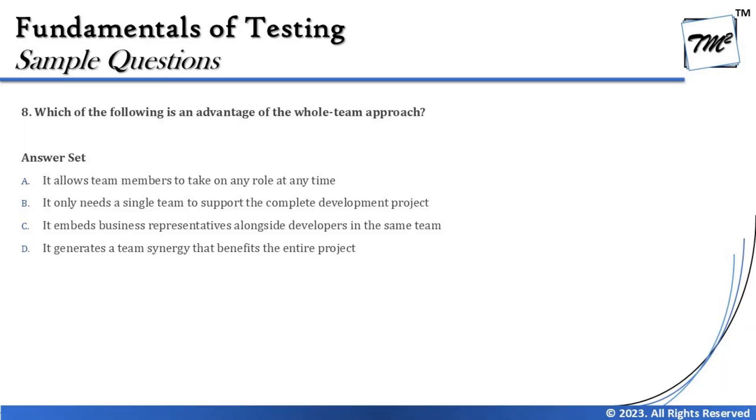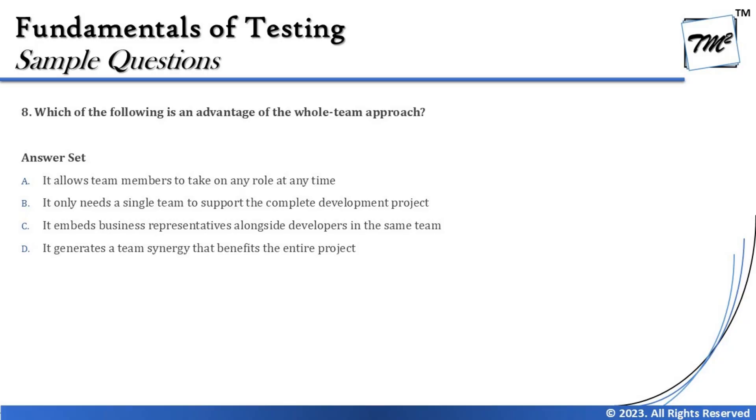The next question is question number eight: which of the following is an advantage of the whole team approach? To recall, the whole team approach involves working together with developers, understanding each other, sometimes working in pairs. It allows each team member to have basic skills so that dependency on any one person can be removed and anyone can pick up another's task. This was introduced by extreme programming and is generally followed in agile methodology.